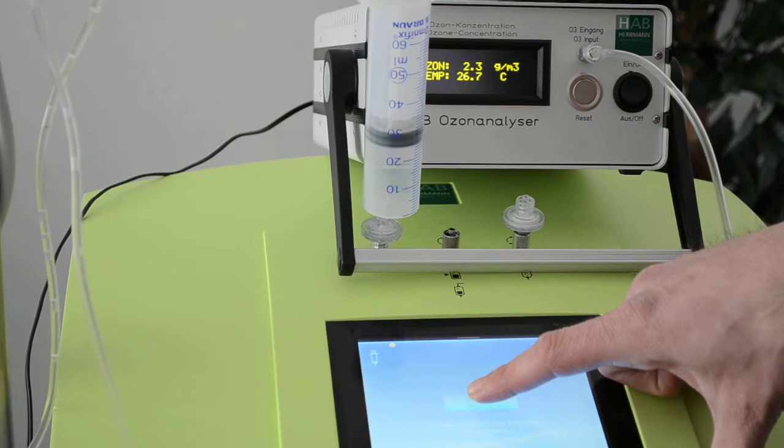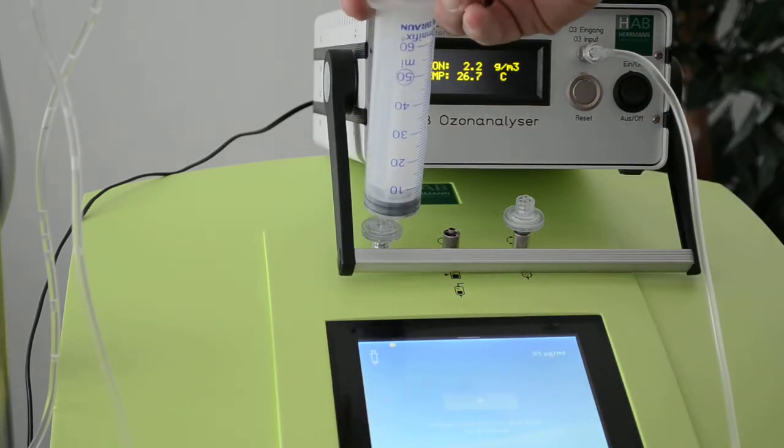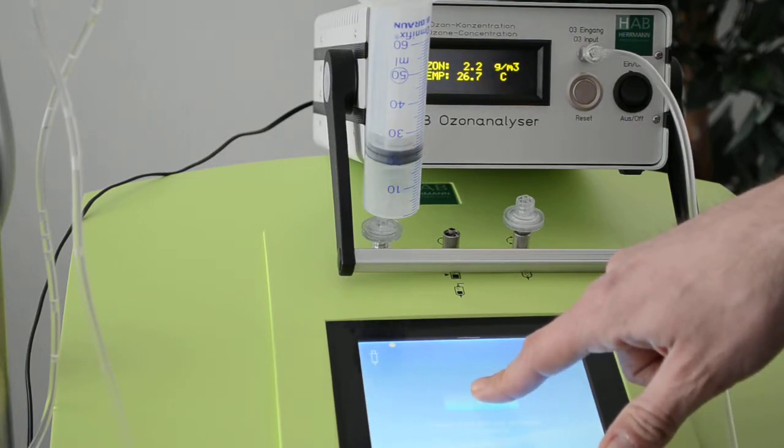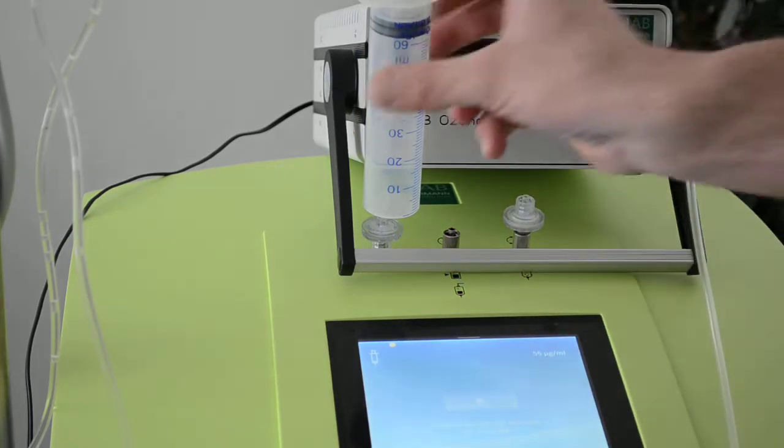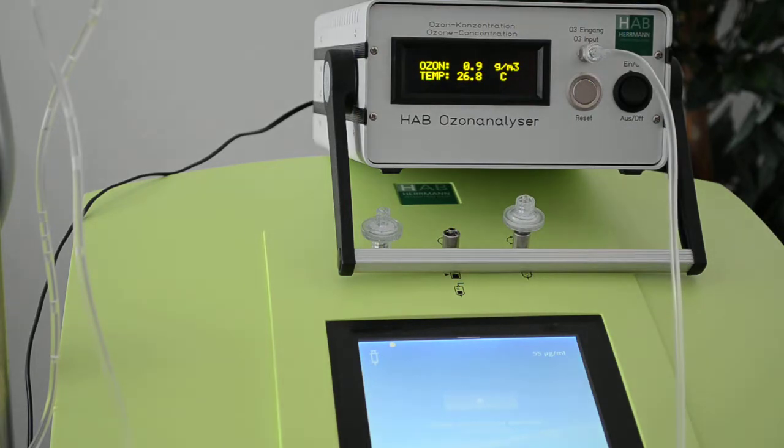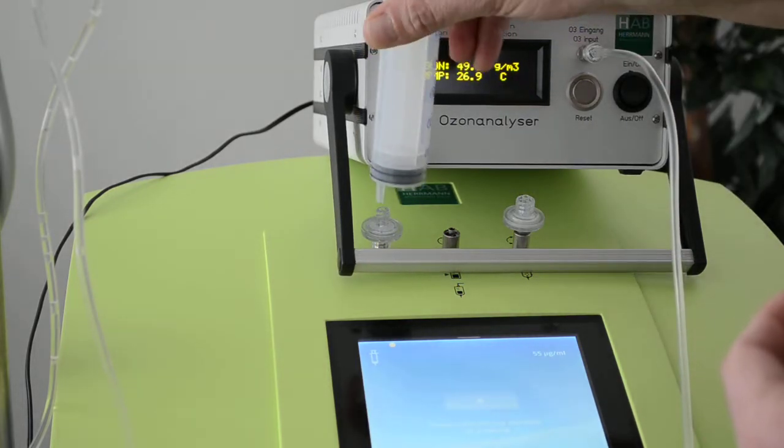The first time we will flush it as described in our manual. Then I fill the syringe a second time. Let's fill it completely. Then I take it away, add it here, and press it into the analyzer. 54.3. We can do it again.